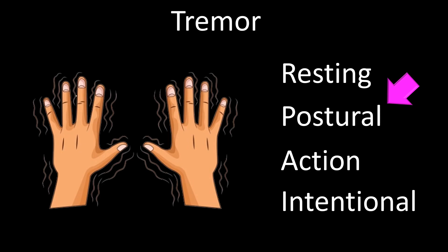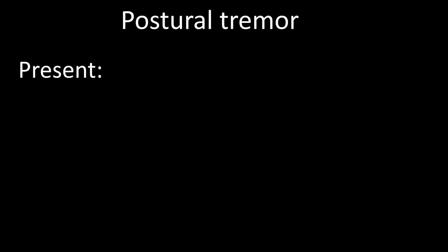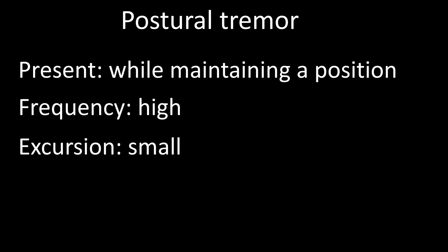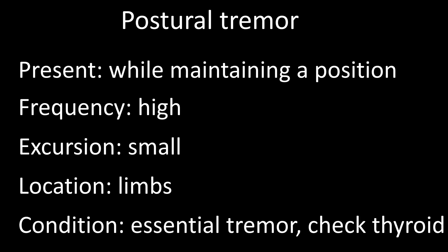Postural tremor is present while maintaining a position. It is a high-frequency tremor, usually 8 Hz or above. The degree of excursion of movement is small, and it most often involves the limbs. It is found in essential tremor, a familial condition, and in hyperthyroidism, among other conditions.